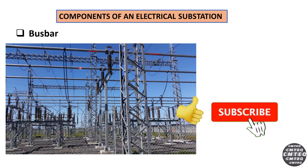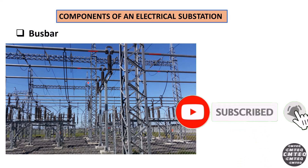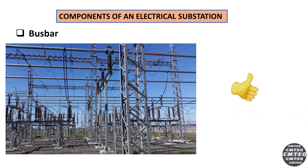They carry current from this point to this point. As you can see here, we've got plenty of bus bar in this switch yard. A switch yard, if you look at the first presentation, is basically where you're going to find all types of electrical components — circuit breakers, transformers, isolators, capacitor banks, and so forth — all working together, and you're going to have these bus bars here.